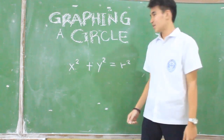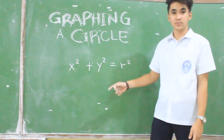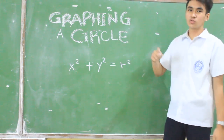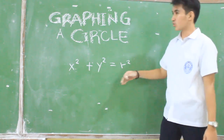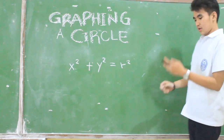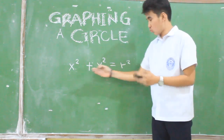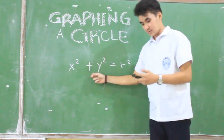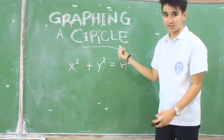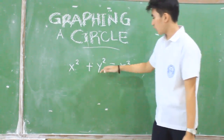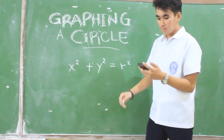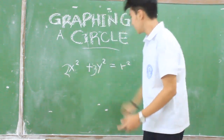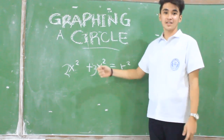Now, how do we determine if an equation is a circle or an ellipse? We are focusing on a circle. If the x squared and y squared are both positive and have the same coefficient, then you have a circle. If the x squared and y squared are both positive but have different coefficients — like a 2 and 3 — then the equation is an ellipse.